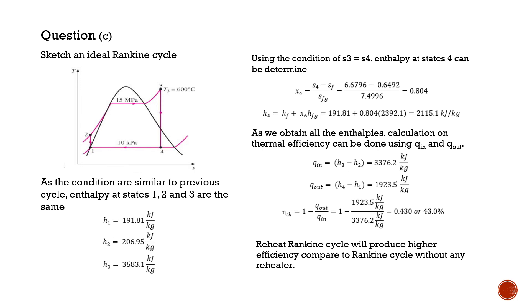Now, we take a look at question C, where the comparison of the thermal efficiency takes place. As the question requires us to have an Ideal Rankine Cycle, it means that we need to sketch an additional TS diagram for the cycle.